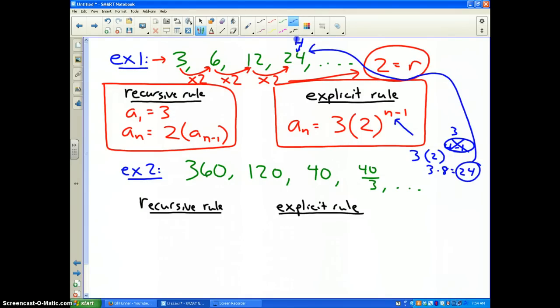Example 2: 360 to 120 to 40 to 40 thirds, etc. Well what's the common ratio? What's happening? Well it looks like we're dividing by 3. Now we don't want to write divide by 3 as my r value, my common ratio r. You can't write divide by 3, but dividing by 3 is the same as multiplying by a third. You need to know that. R then would be 1 third.